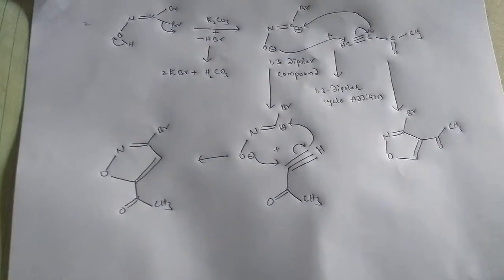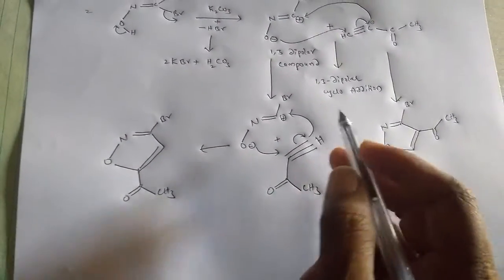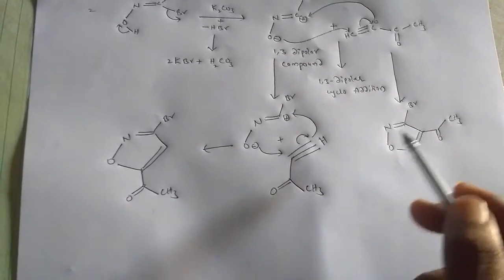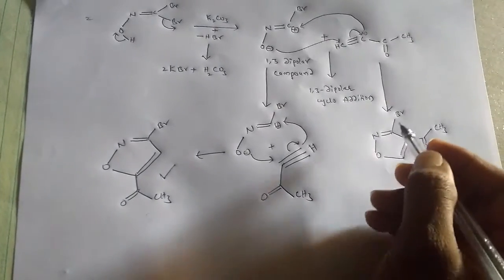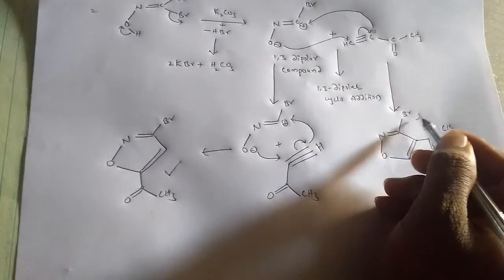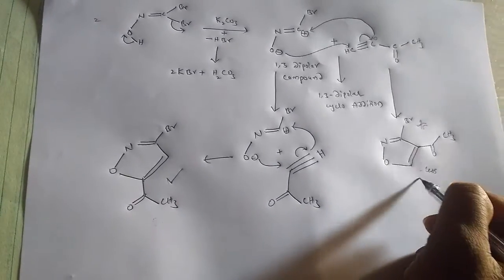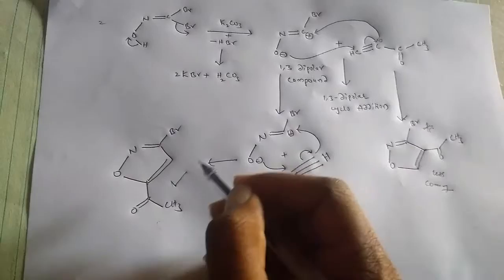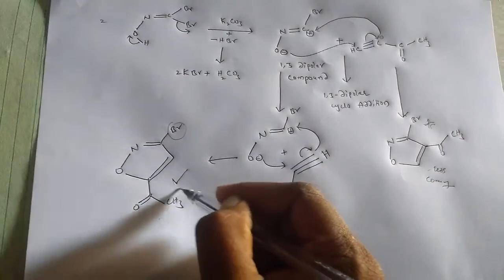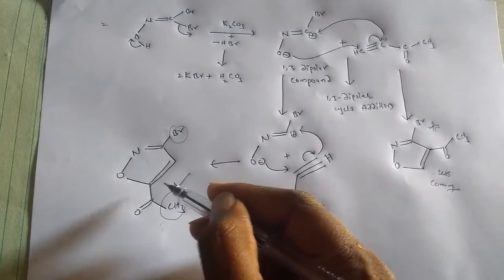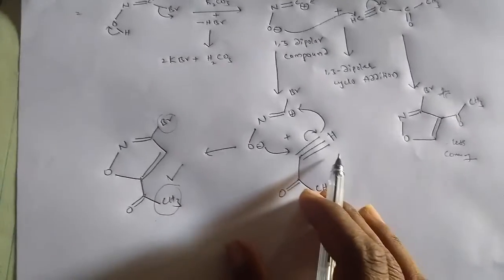We get two possible 1,3-dipolar cycloaddition products. One is less common due to steric problems. The other is more possible because there is no steric repulsion between the bulky bromine group and the methyl group — so this regioisomer is preferred.